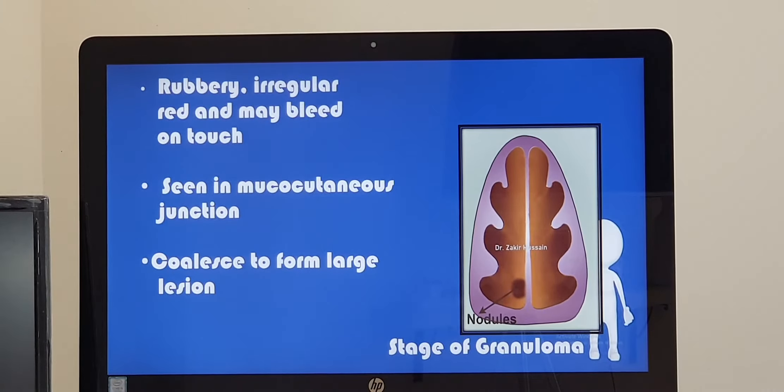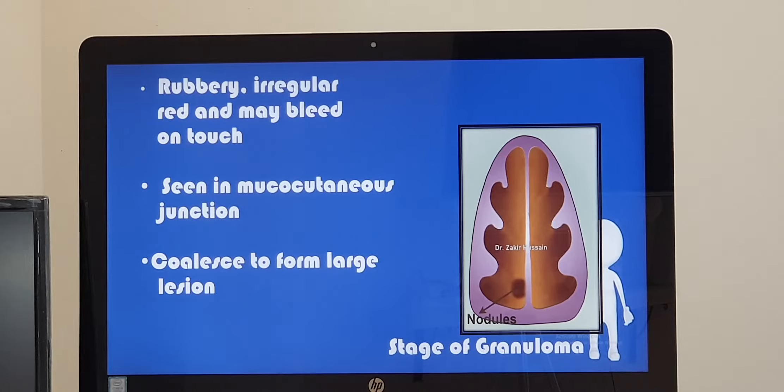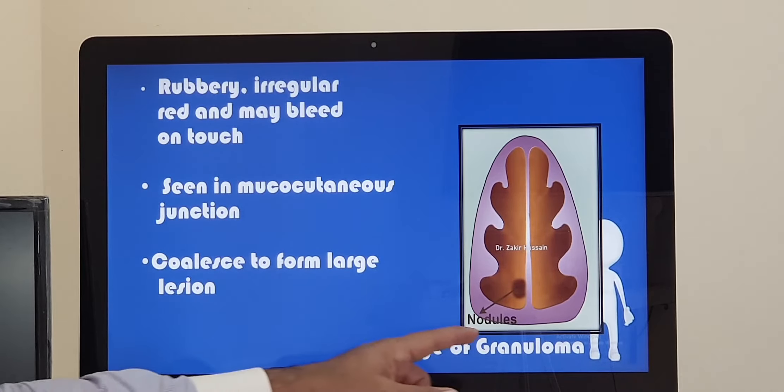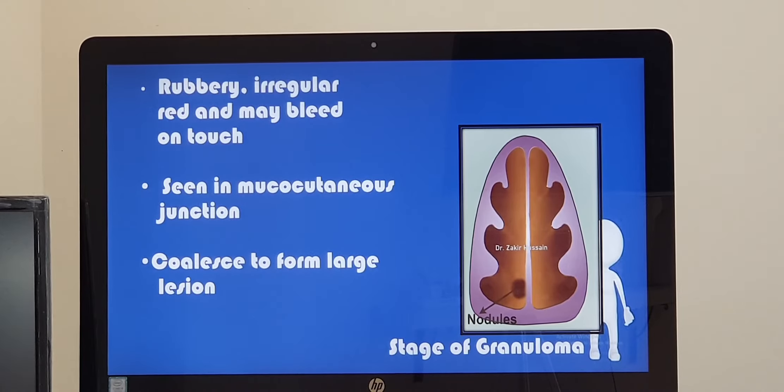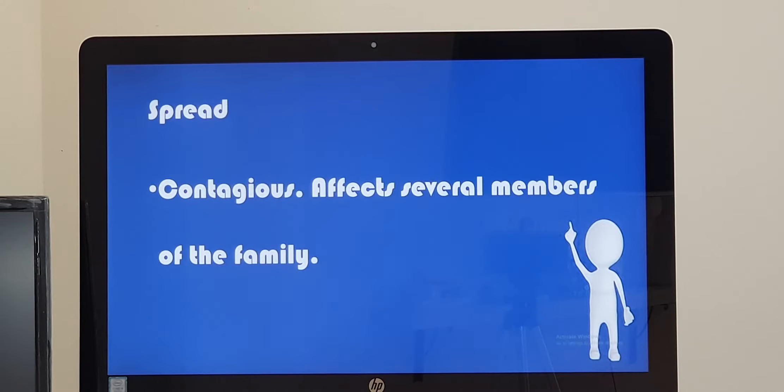The stage of granuloma, you have multiple nodules everywhere and each nodule will be rubbery, irregular in shape and reddish and it may bleed on touch. Usually it starts from the mucocutaneous junction, it will be seen everywhere. And these nodules can all join together to form a large lesion too. And stage of cicatrization, extensive deformity of the external nose and inside the nose too.